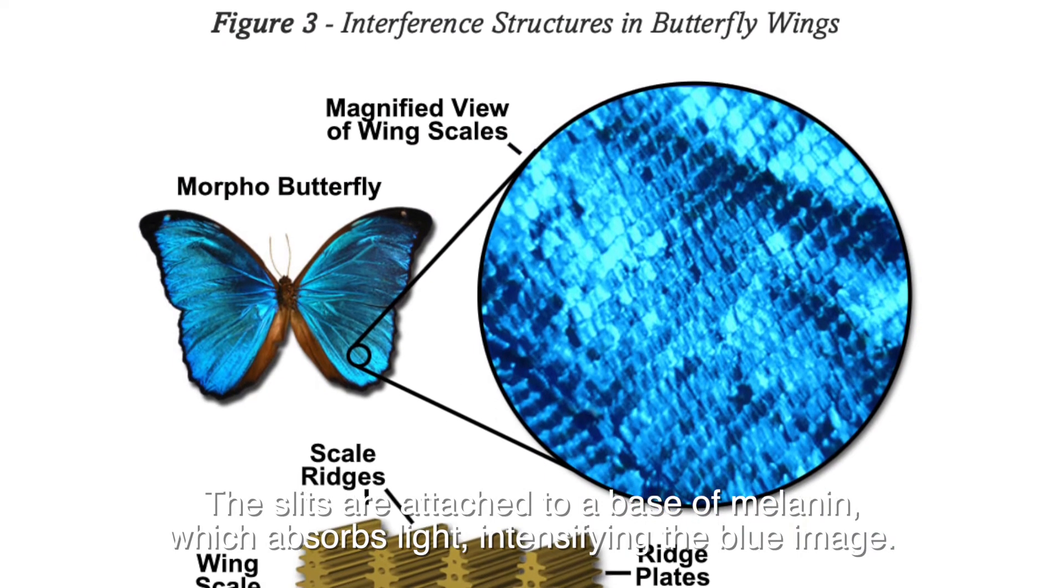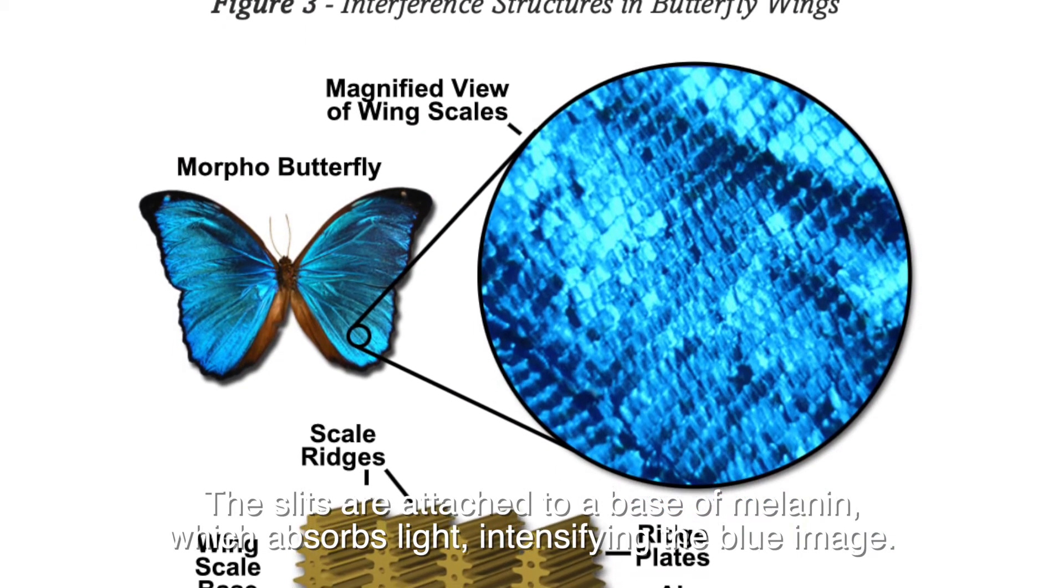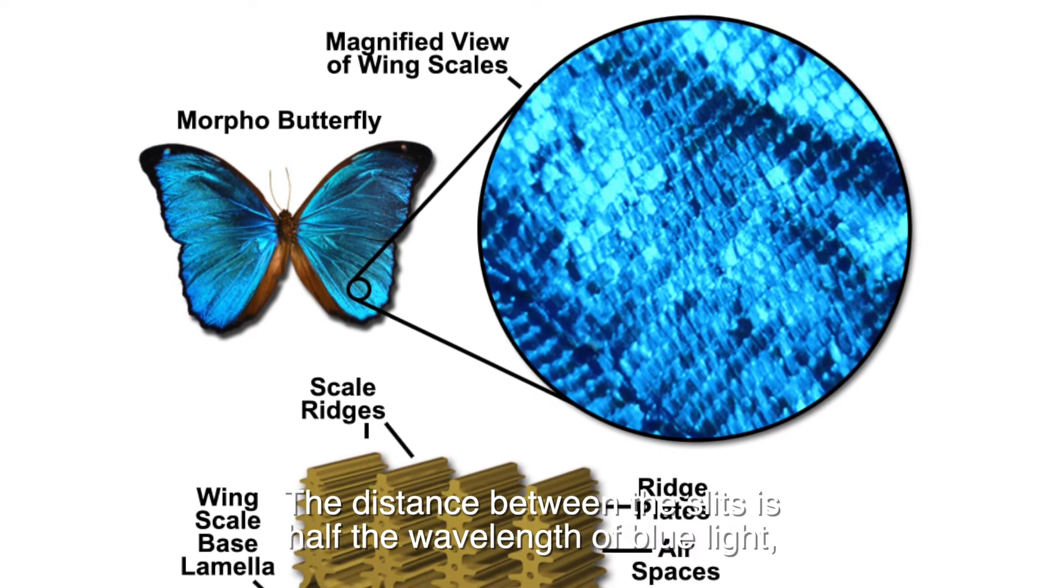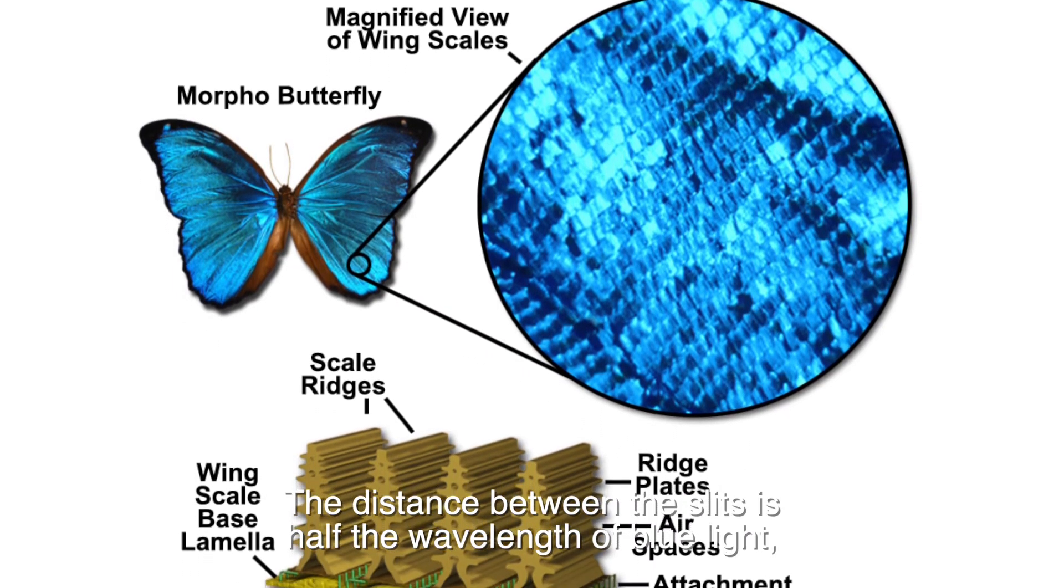attached to a base of melanin, which absorbs light, intensifying the blue image. The distance between the slits is half the wavelength of blue light.